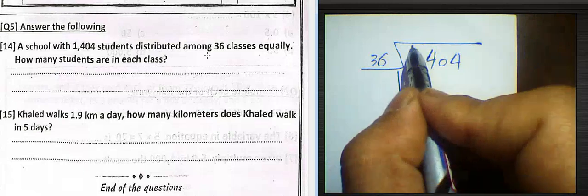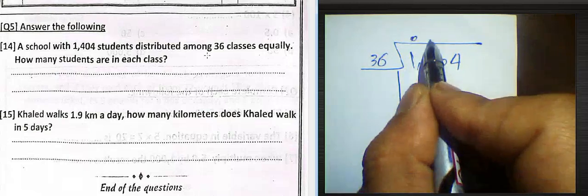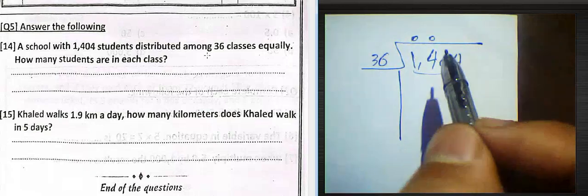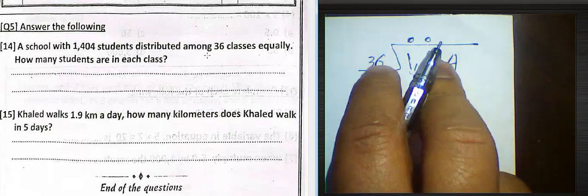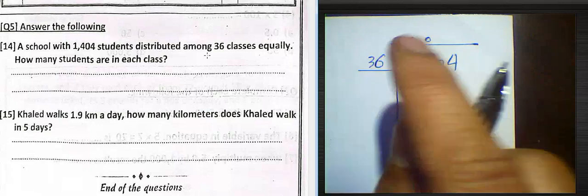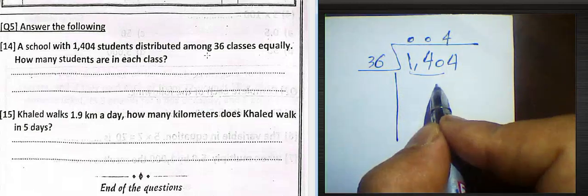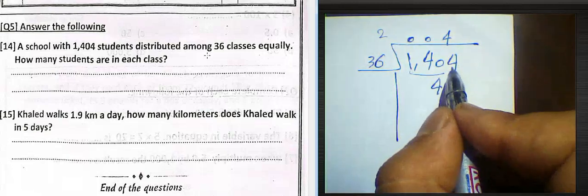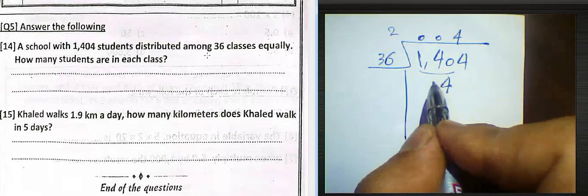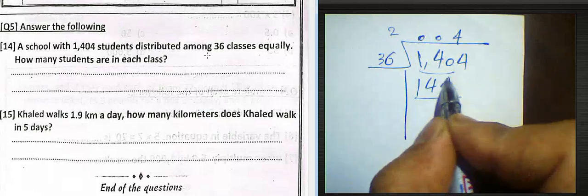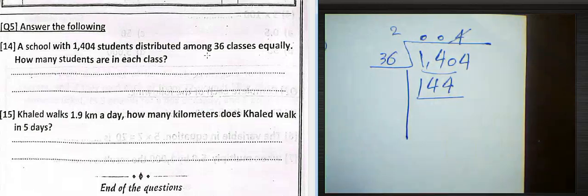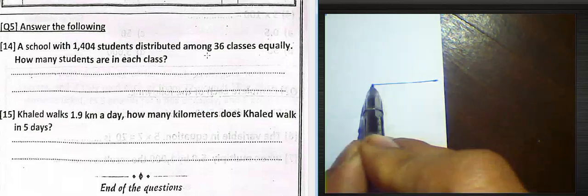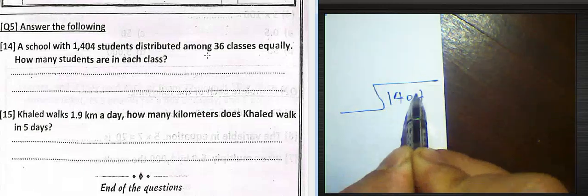1 divided 36, we can't do it. 14 can't do it. 140 divided 36, we can find the result by multiplication by 4. 14 minus 3 equals 4. 4 times 6 equals 24, write 4 and carry up 2. 3 times 4 is 12, 12 plus 2 equals 14. So it's greater than, we can do it. So we must cancel 3 here and write 3 to find the result.